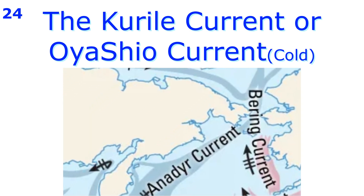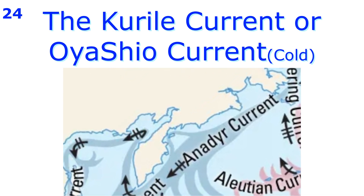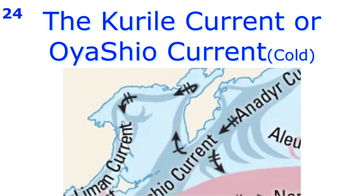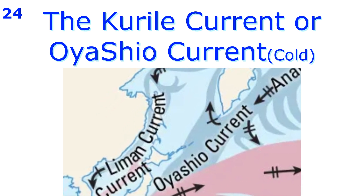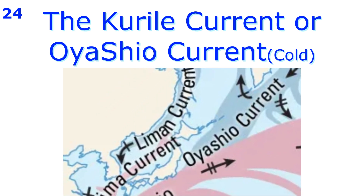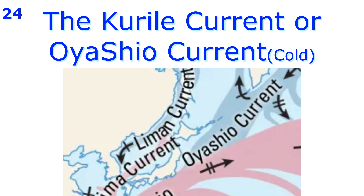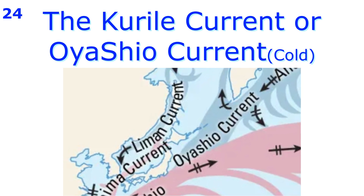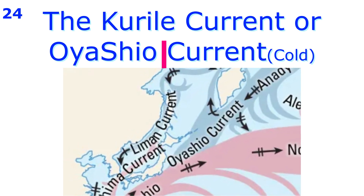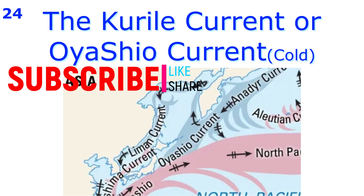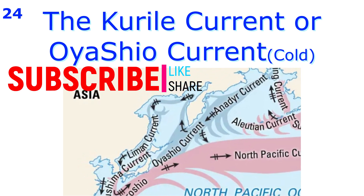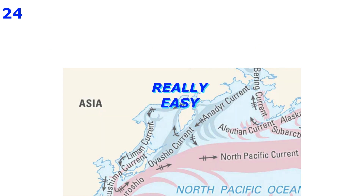The Kuril Current, or Oyashio Current, is a cold current which originates in the Arctic Ocean and flows along the coast of Japan. It is similar to the Labrador Current of the Atlantic Ocean. The Kuril Current makes Japan and the coast of the Asian mainland severely cold in winter.